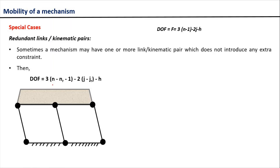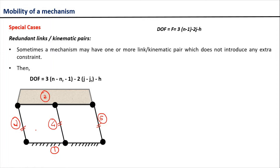In this mechanism you can see it consists of five links. Let me name these links: the fixed link as link 1, this link as link 2, this link as link 3, this link as link 4, and this link as link 5. Now if you observe carefully, if we remove any of the links 2, 4, or 5, the relative motion between the links in the mechanism is not going to change.